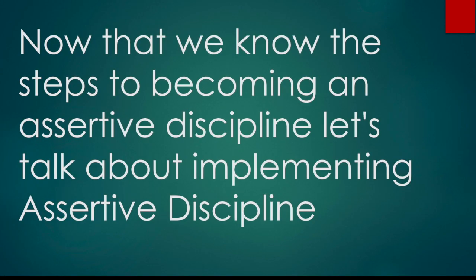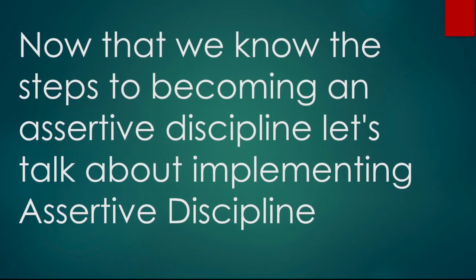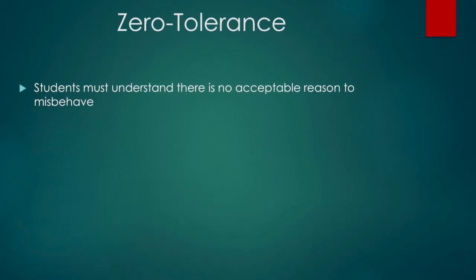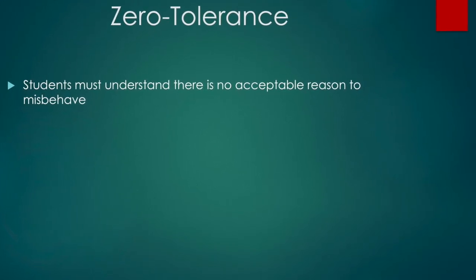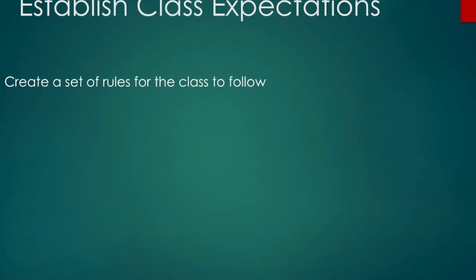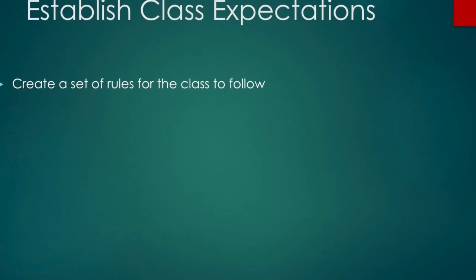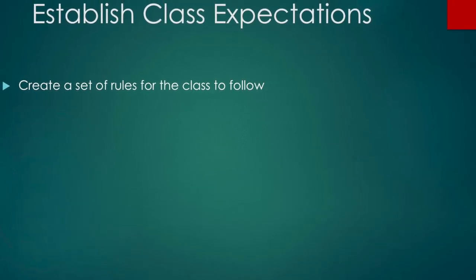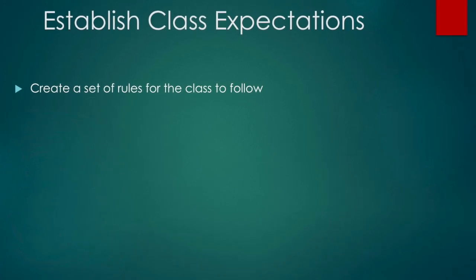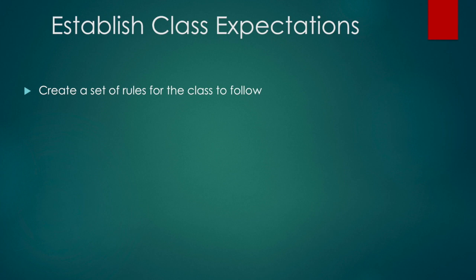Now that we know the steps to becoming an assertive disciplinarian, let's talk about implementing assertive discipline in your classroom. Students must understand there is no acceptable reason to misbehave. You should establish class expectations and create a set of rules for the class to follow. There should be a visual posted somewhere in the room for students to see. Go over these rules with them and give good and bad examples to help apply them in the classroom.